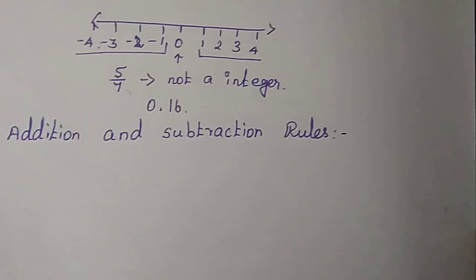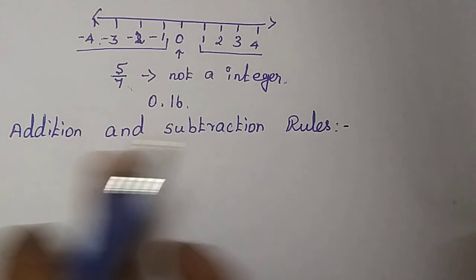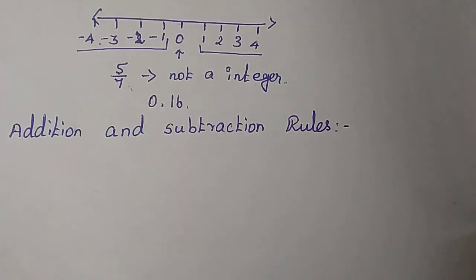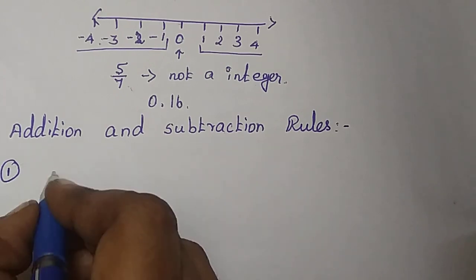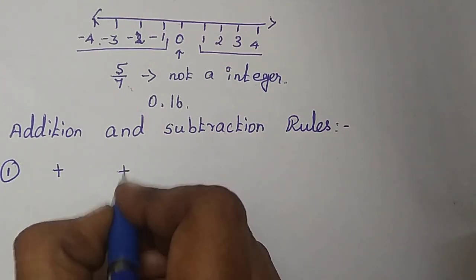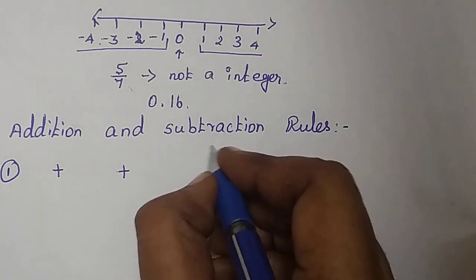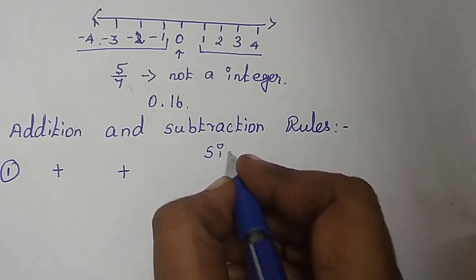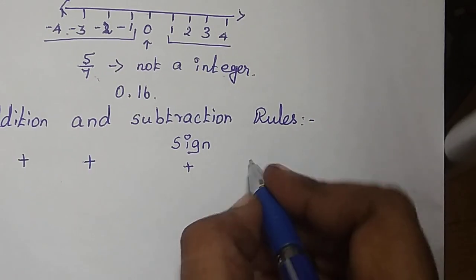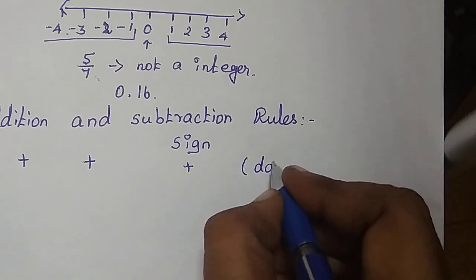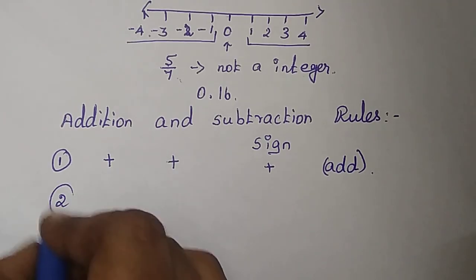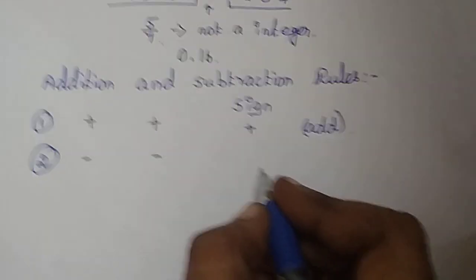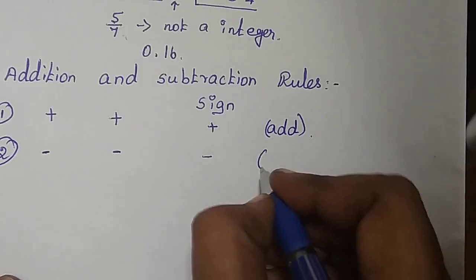Now we start addition and subtraction rules. We have 4 rules. First rule: if you add 2 positive numbers, you get a positive result. Second rule: if 2 numbers are negative, you add them and get a negative result.